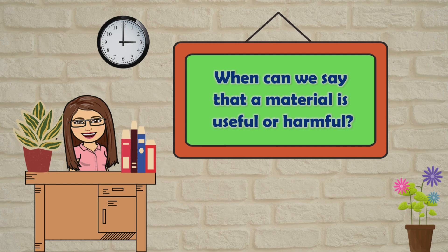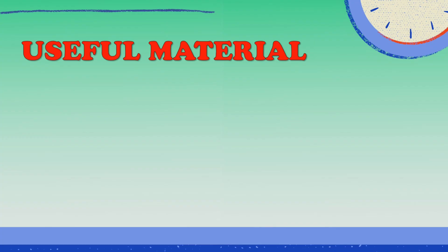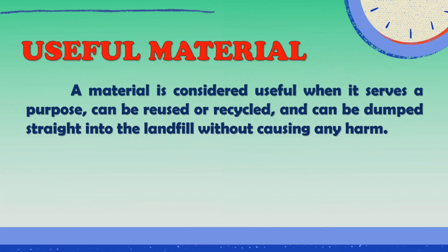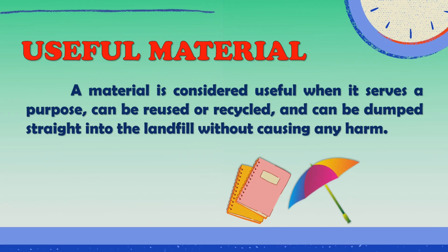Now, when can we say that a material is useful or harmful? A material is considered useful when it serves a purpose, can be reused or recycled, and can be dumped straight into the landfill without causing any harm. There are many useful materials found in our home, such as kitchen tools, personal care products, and cleaning materials. Notebook, umbrella, and even the frying pan that your mother uses in cooking are examples of useful materials.